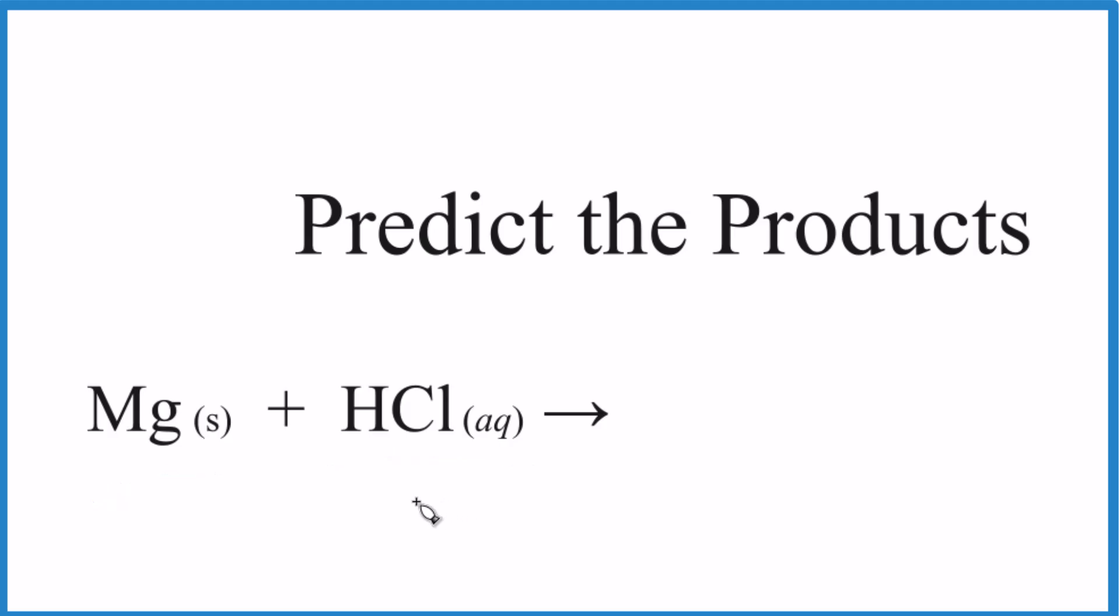The first thing we need to do is recognize what type of reaction we have here. When you have a metal by itself, you might start thinking single replacement. Here we have hydrochloric acid, so this is going to be a single replacement reaction.